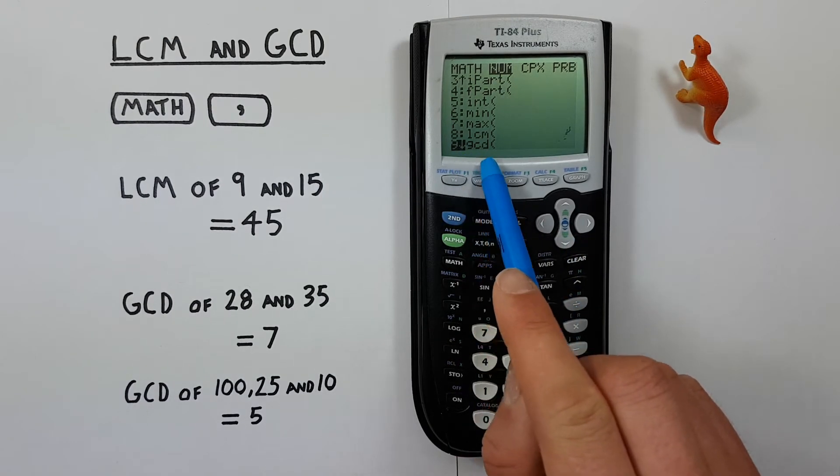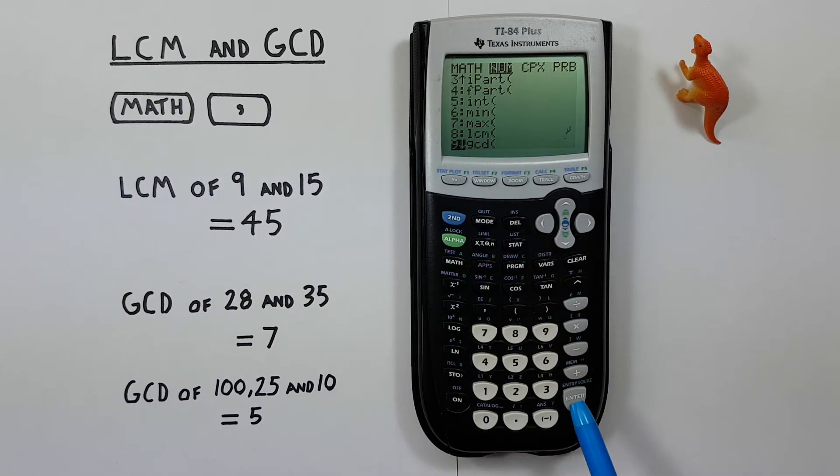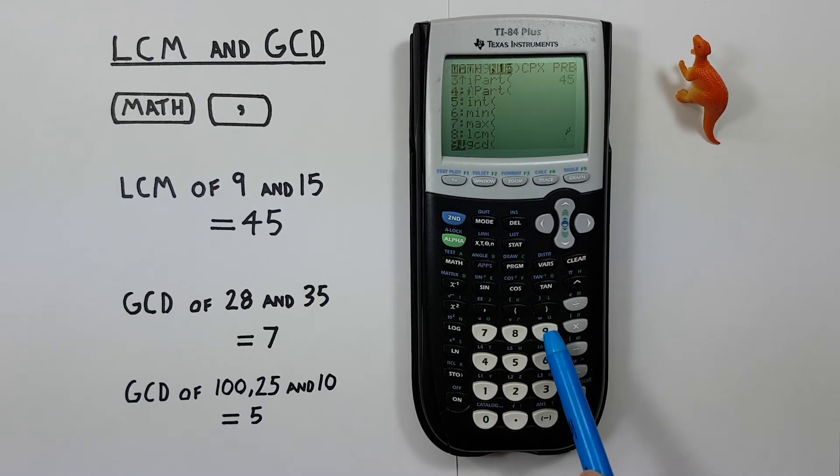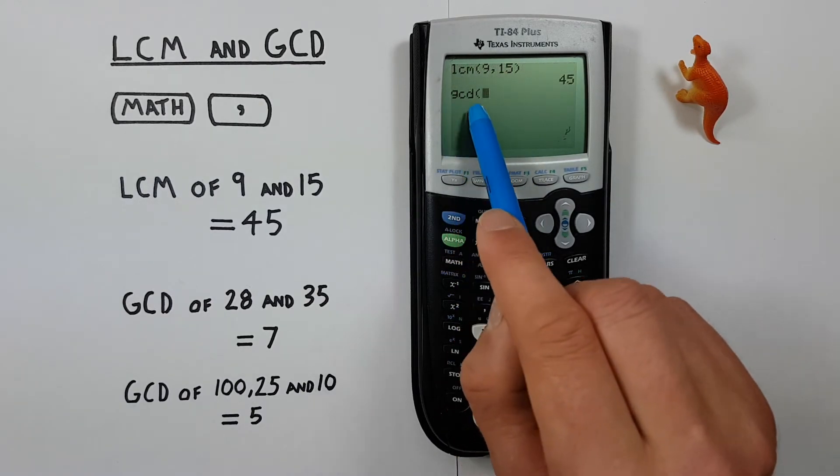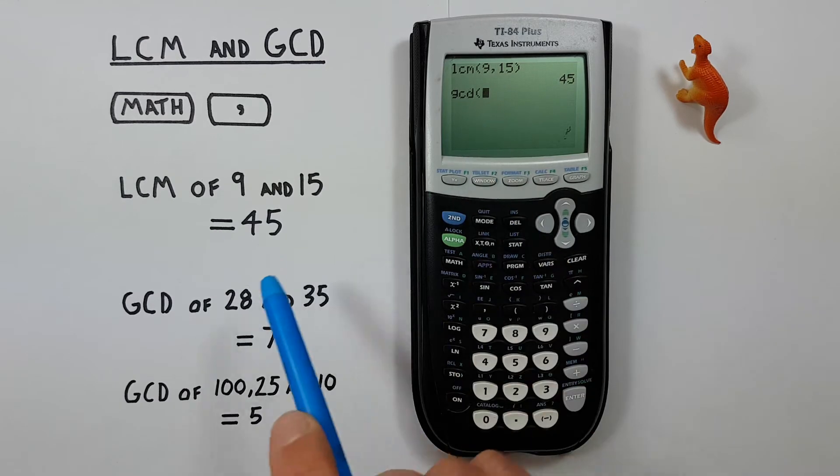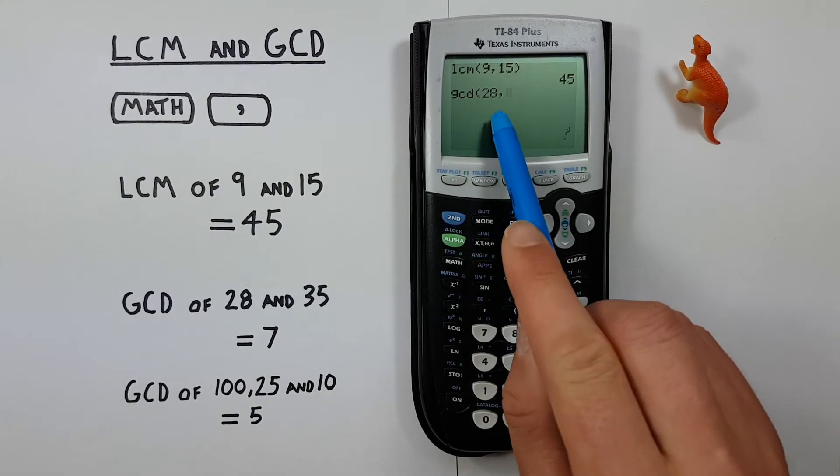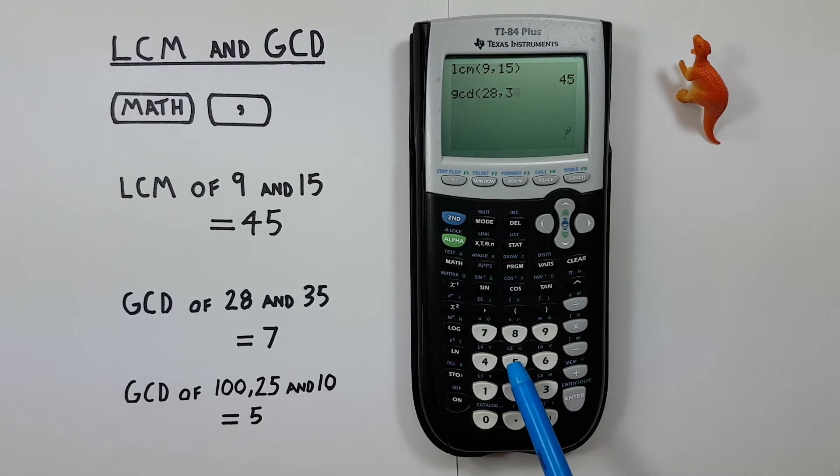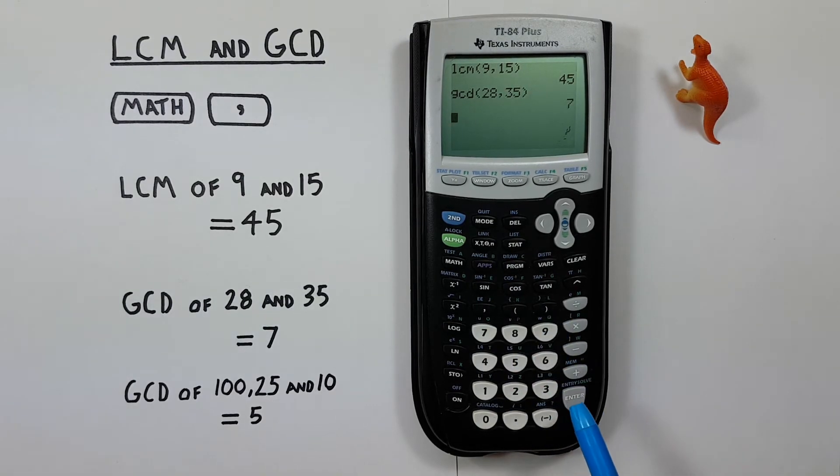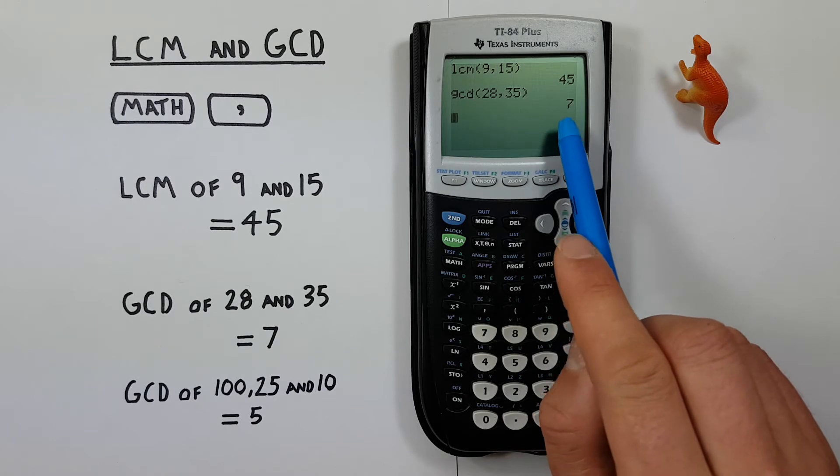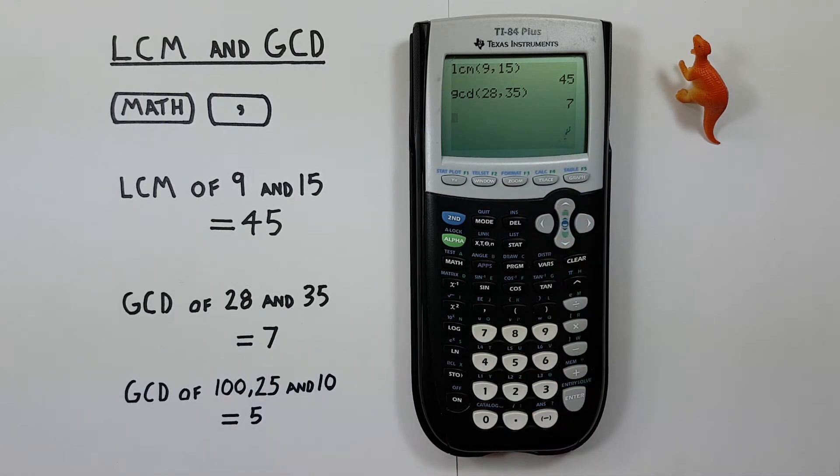we see number 9 in this menu is GCD. So we can either hit enter, or just press 9, and we get GCD on the screen. So again, we start with 28, comma, 35, and close our bracket, and press enter, and we see we get a result of 7, which is correct.